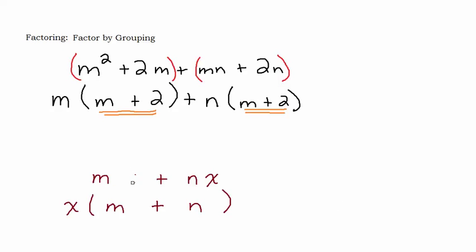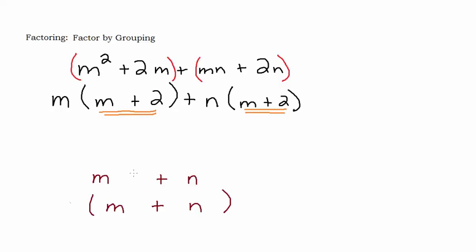Let's take it a step further. Let's say instead of x we have a baseball — m times a baseball plus n times a baseball. They have a baseball in common, so we could factor that out.